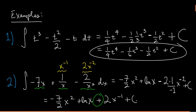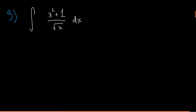Now let's do one more example that's more complicated: the integral of x squared plus 1 divided by the square root of x, dx. At first it doesn't look like you can integrate the parts separately because we're dividing by another function — the square root of x. The trick is to separate them.